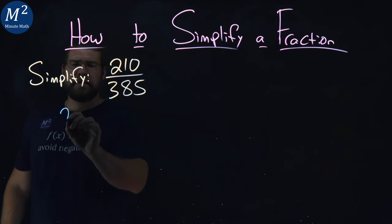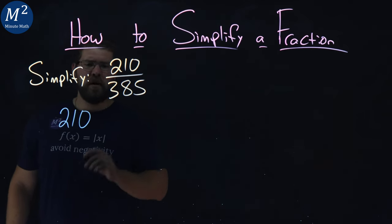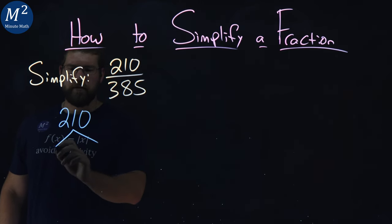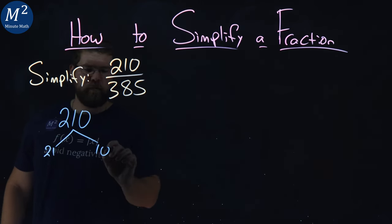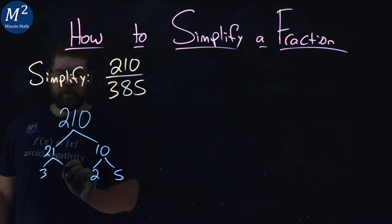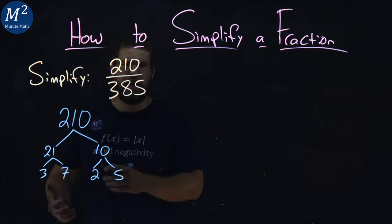Let's start with 210 here. 210 breaks down to be, well, I see a 21 times 10. Pretty easy. From there, 10 breaks down to be 2 times 5, and 21 is 3 times 7. Not too bad.